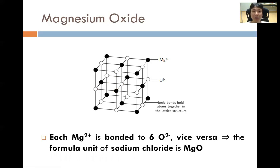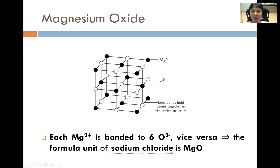Another example is magnesium oxide. The cation Mg2+ and the anion O2- vibrate about their fixed positions. The strong electrostatic forces of attraction between Mg2+ and O2- are the ionic bonds that hold the ions together in the lattice structure. Each Mg2+ is bonded to six O2- ions, and vice versa. Hence, the formula unit of magnesium oxide is MgO.